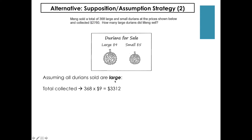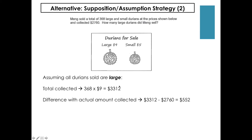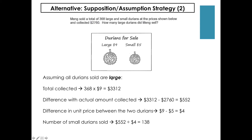The difference between the total amount based on our assumption and the actual amount collected is $3,312 minus $2,760, giving $552. The next step is to find the unit price difference between the two durians: $9 minus $5 gives $4. Dividing $552 by $4 gives 138, which is the number of small durians sold. Since the question asks for the number of large durians Meng sold, I subtract: 368 minus 138 gives 230, which is the answer.